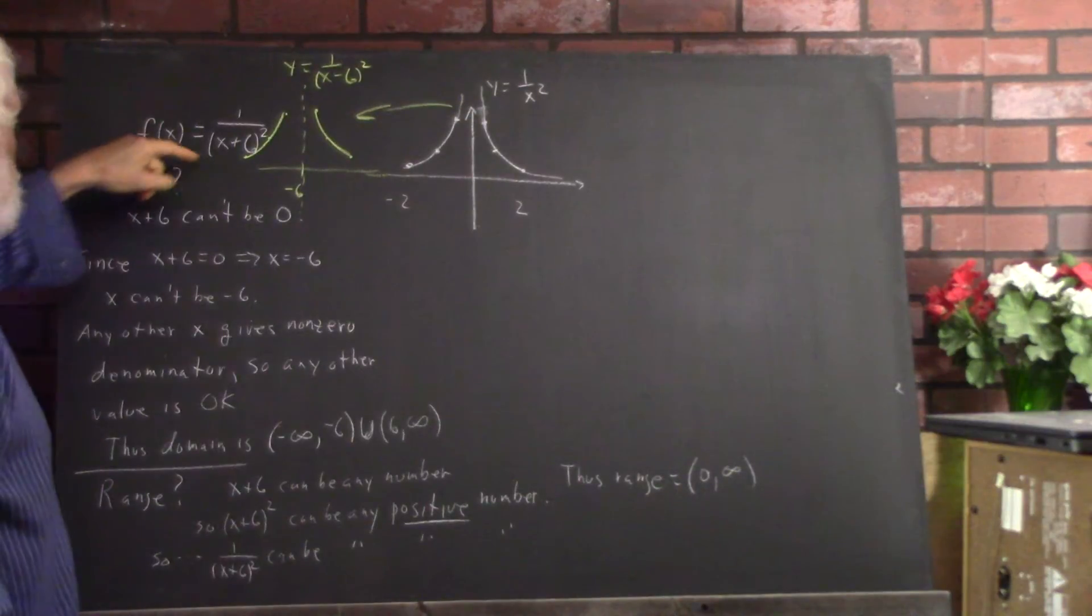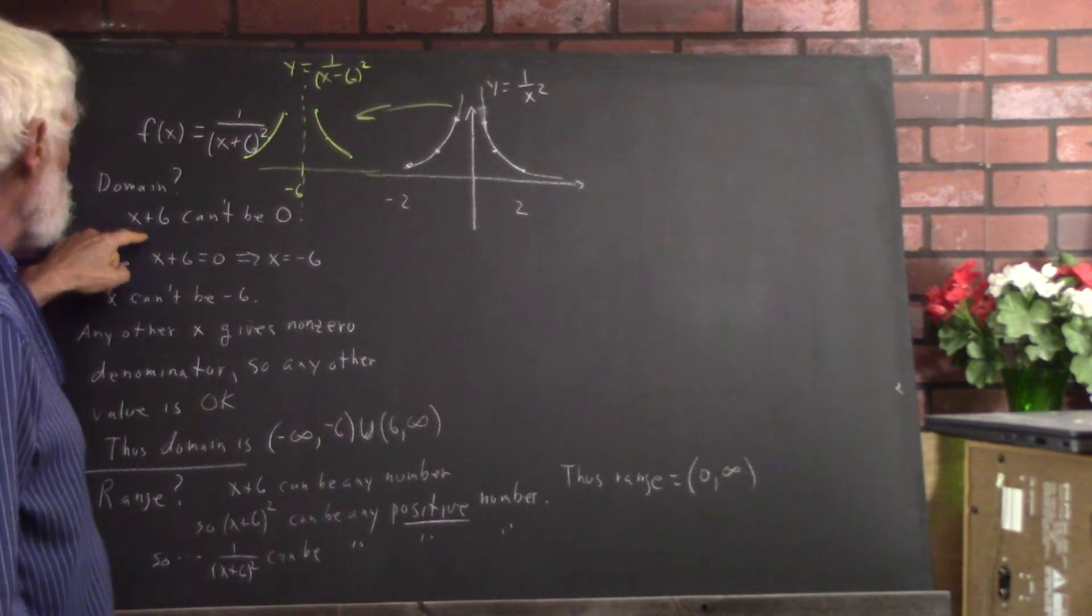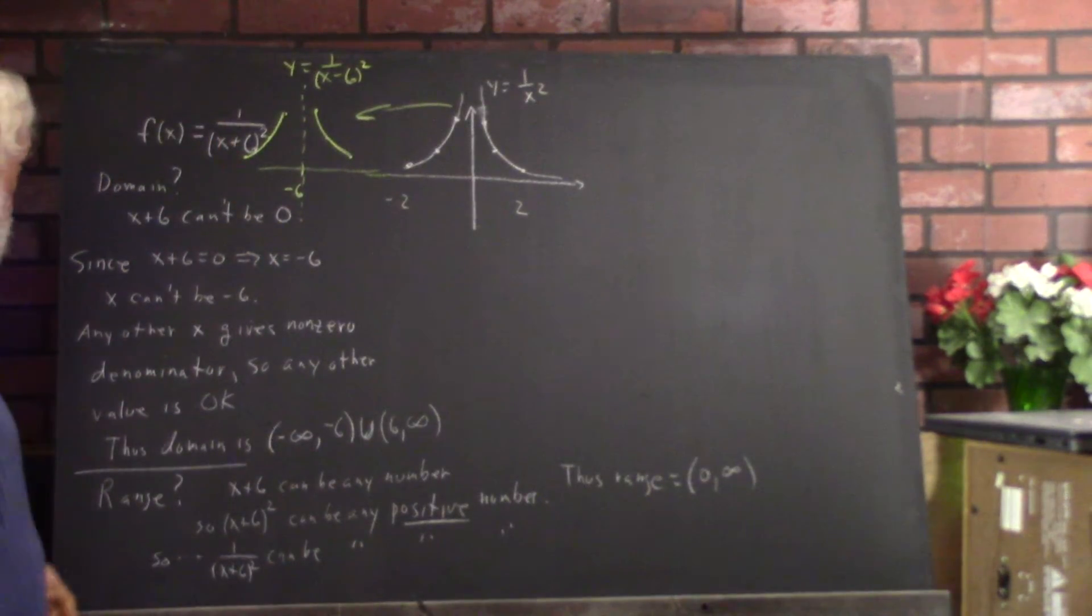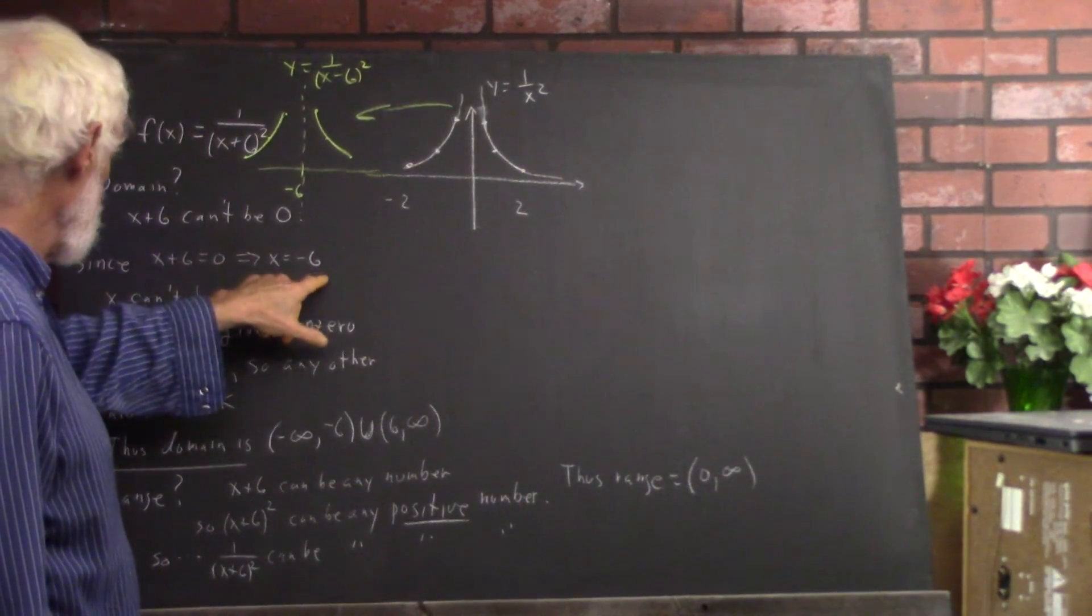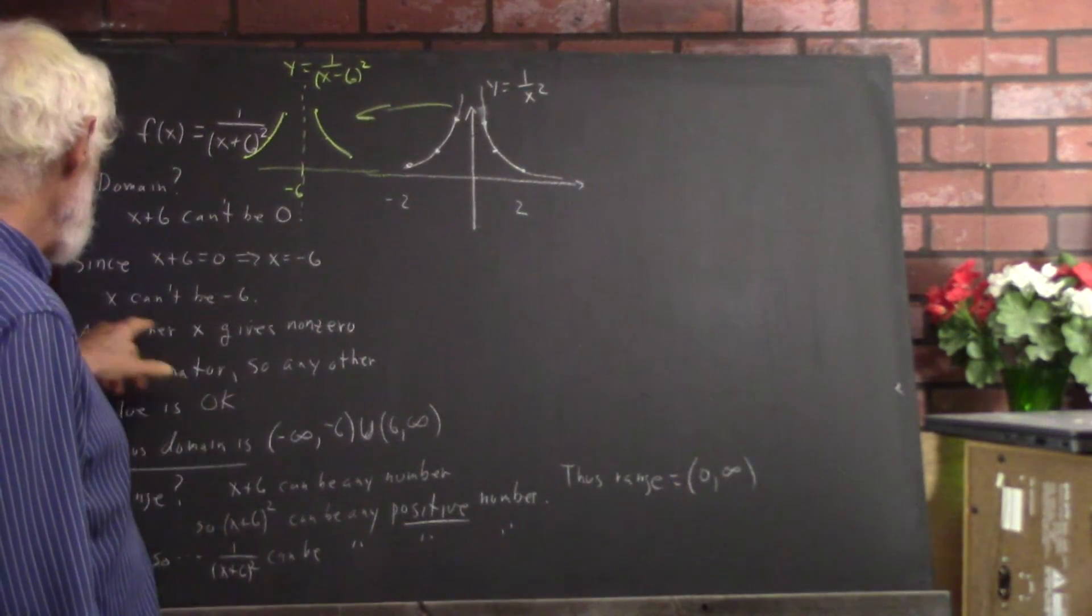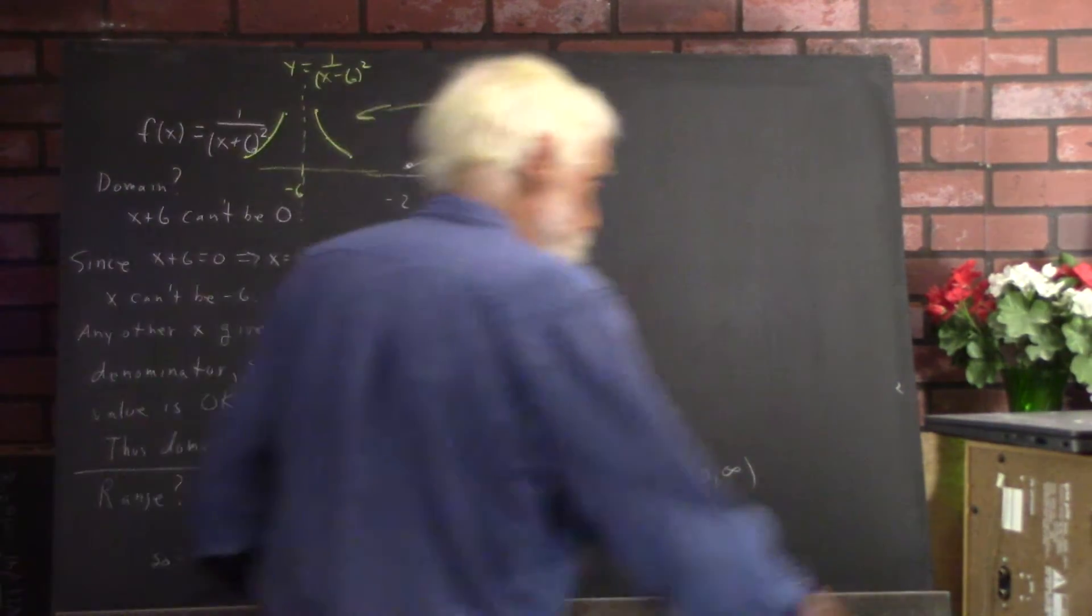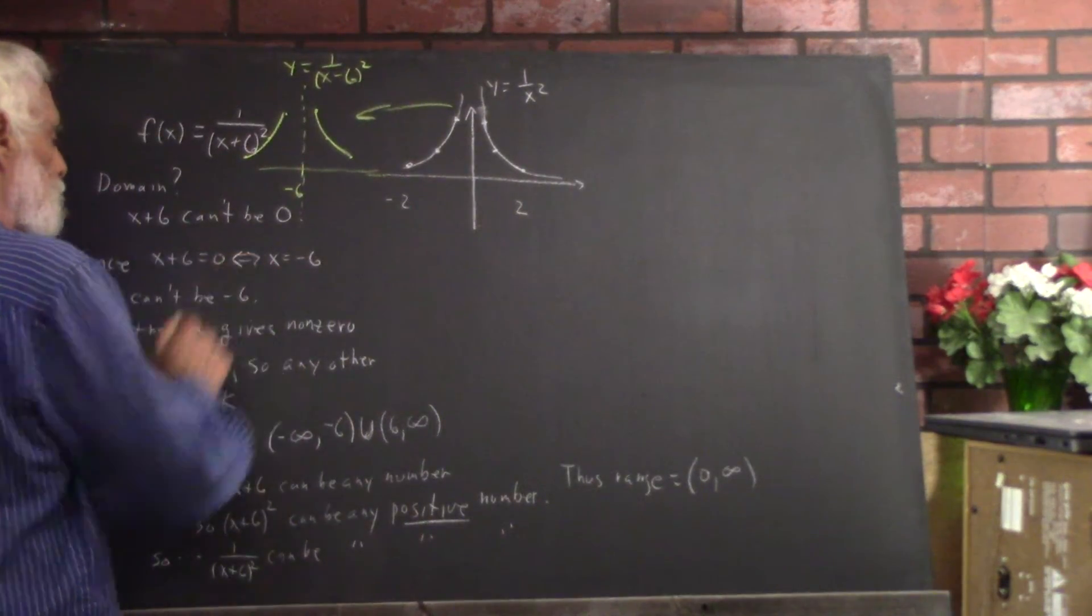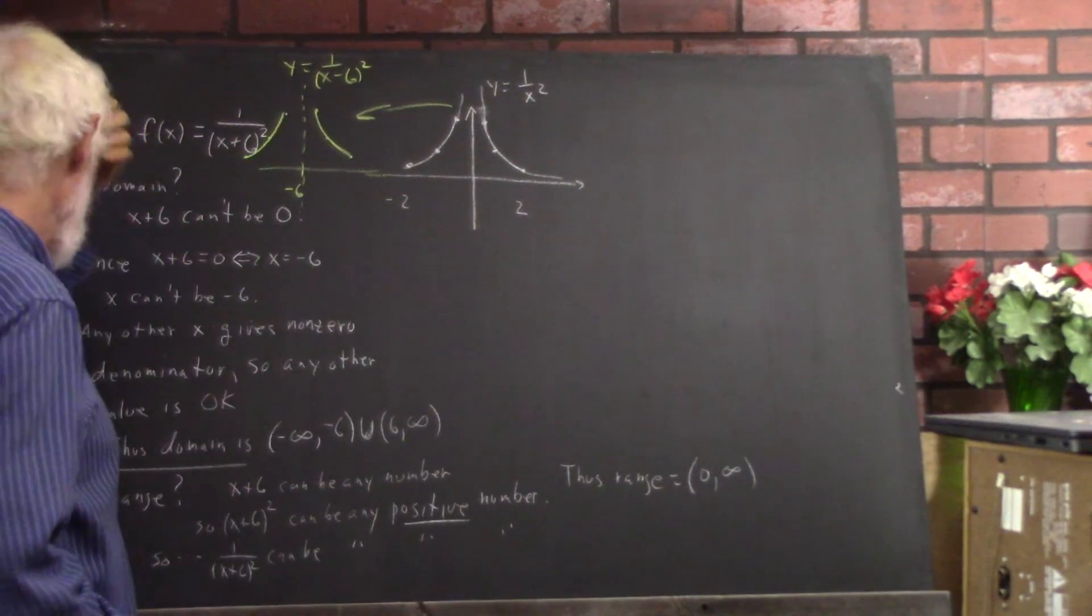Well, the only thing that restricts us is that the denominator can't be 0. So x plus 6 can't be 0 because division by 0 is undefined for a lot of good reasons. Since x plus 6 equals 0 implies that x is negative 6, x can't be negative 6.